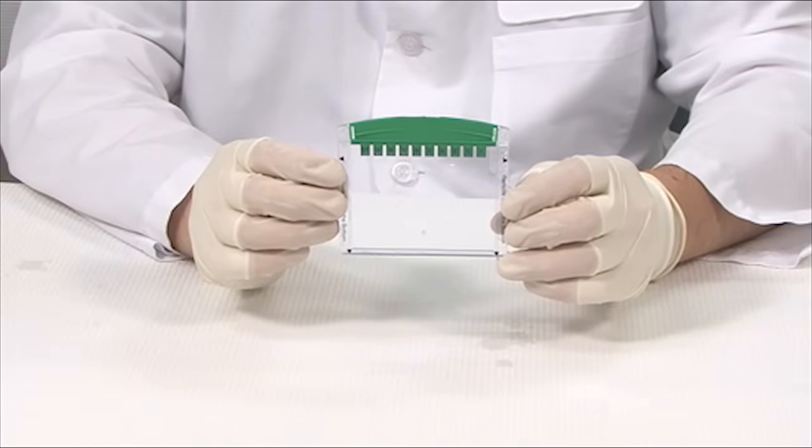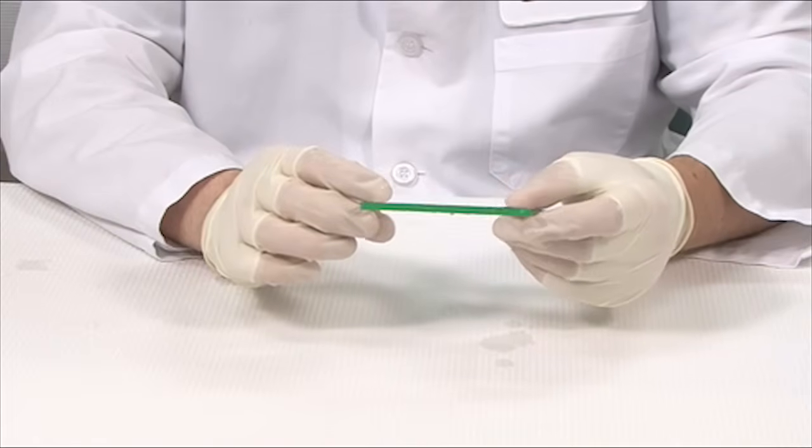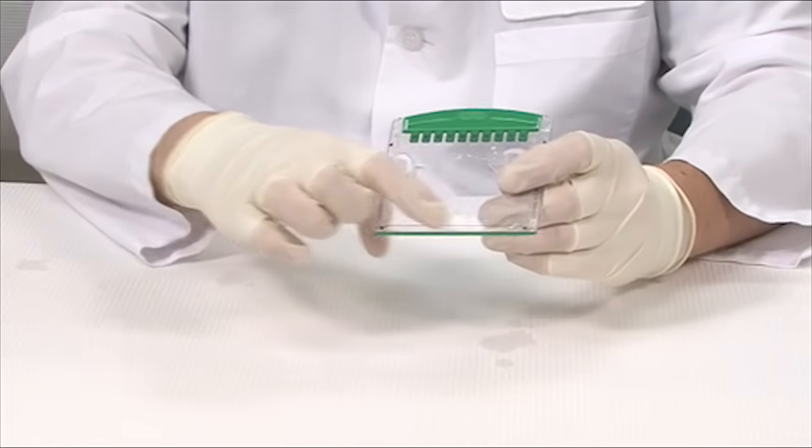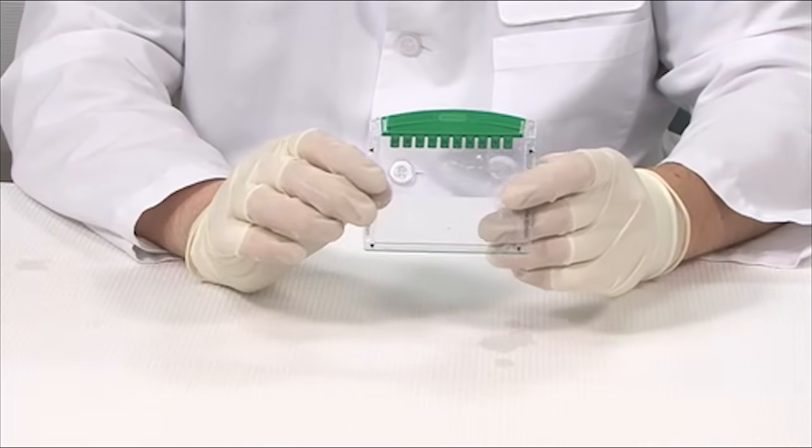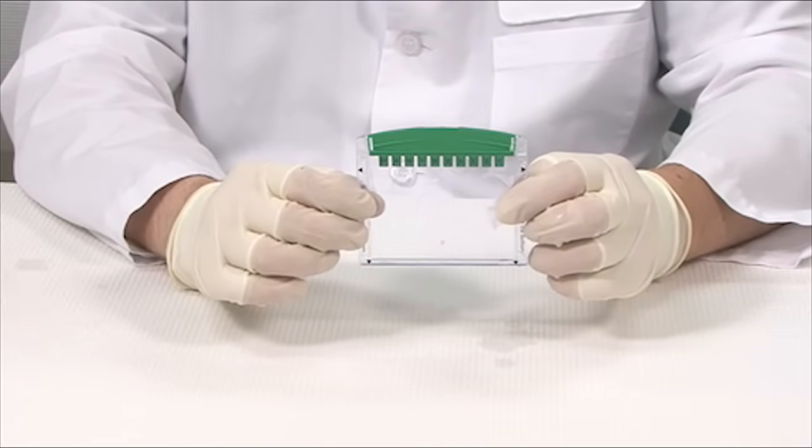The TGX Gel is in an all plastic cassette which has a bottom opening design which allows for increased resolution from your run. There is a reference line to help you monitor your electrophoresis run and the wells are both outlined and numbered for easy sample loading and sample identification.